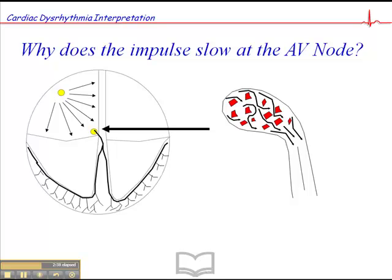Now, if we look at the AV node anatomically, one of the reasons why it slows is that, one, the AV node has a slightly longer refractory period than other tissue, and two, the AV node is composed of a whole bunch of patchy areas of non-conductive tissue, so that when the wave of depolarization hits the AV node, the impulse has to weave its way around all these areas of non-conductive tissue until they reach the bundle of His.